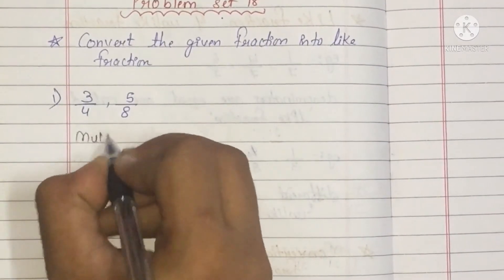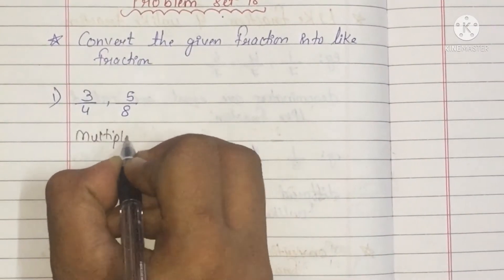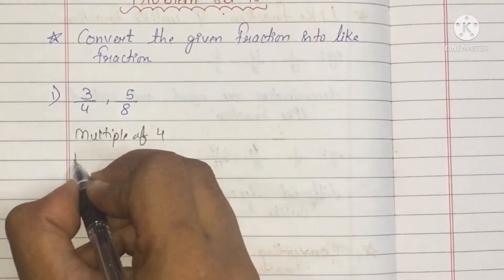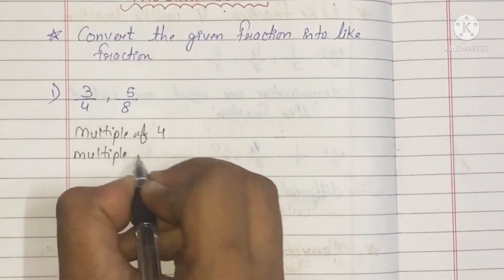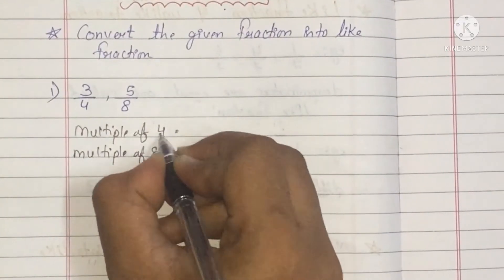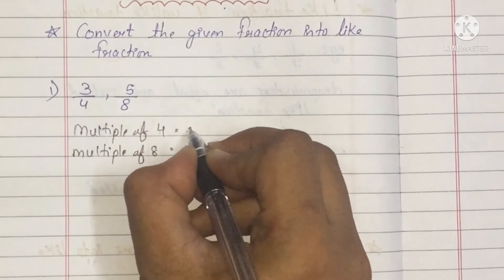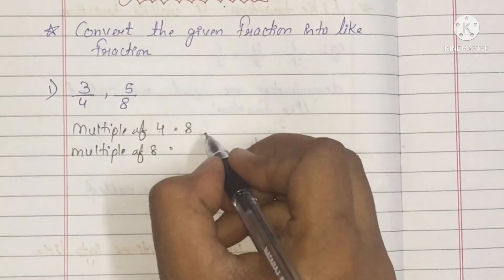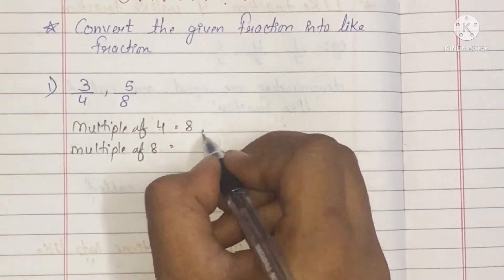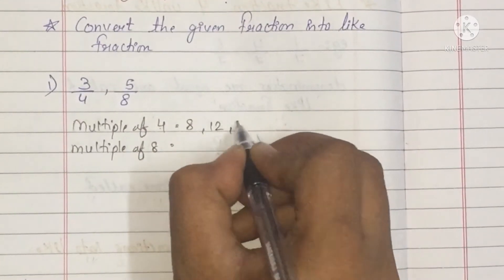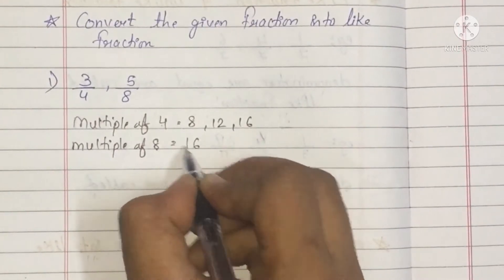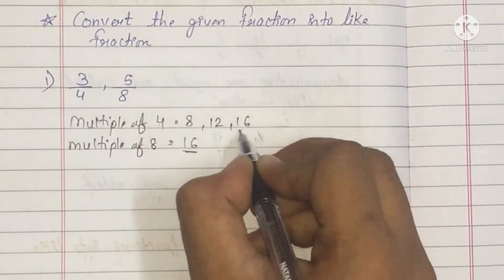Here we have 4 and 8. First, we will see the multiples of 4 and multiples of 8 to make the denominator common. In the table of 4: 4 ones are 4, 4 twos are 8, 4 threes are 12, 4 fours are 16.